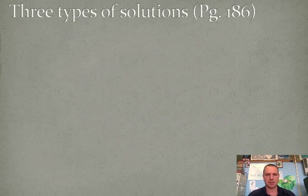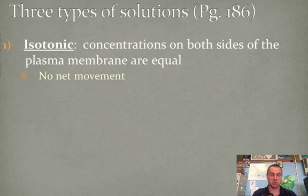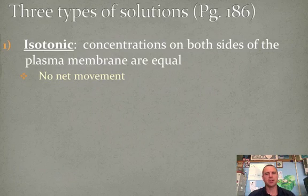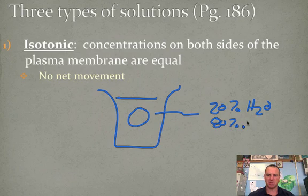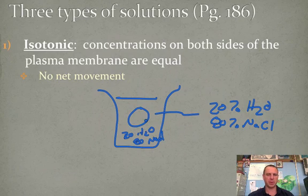The next thing is on page 186. It's talking about three types of solutions that you can put a cell in. It deals with osmosis and diffusion. The first one is an isotonic solution. Don't get caught up in the definition - the concentration of both sides of the plasma membrane are equal. Don't worry about that. What you need to be focusing on is no net movement. That's what I'm asking you on the test. Basically, if you have a beaker and I take a blood cell and throw it in, and inside the cell is 20% water and 80% salt, and in the water in the beaker is 20% water and 80% salt, when you put that cell in there, water is going to be equal on both sides, salt is going to be equal on both sides. There's going to be no net movement. That's called isotonic.